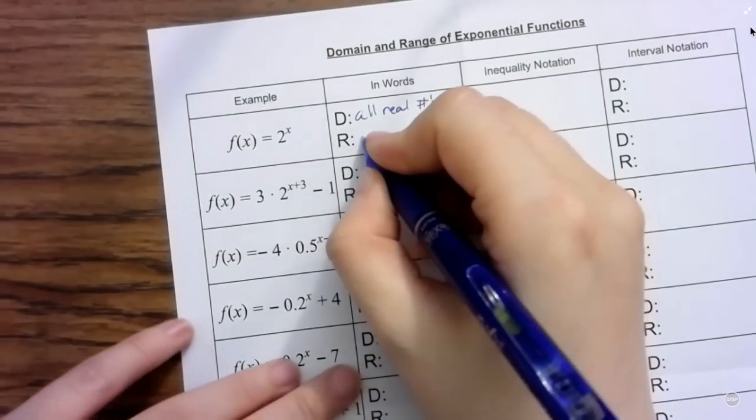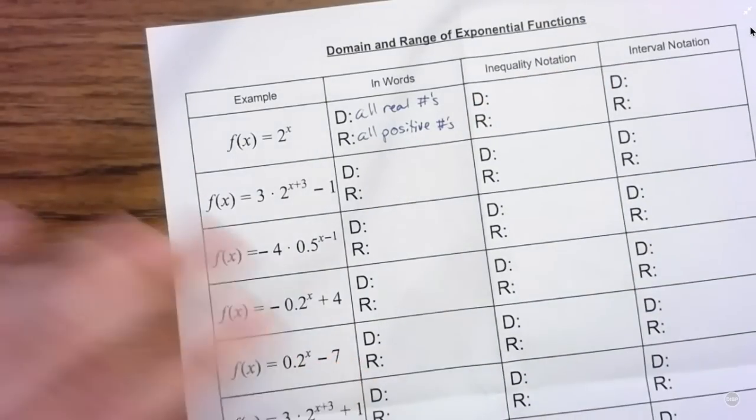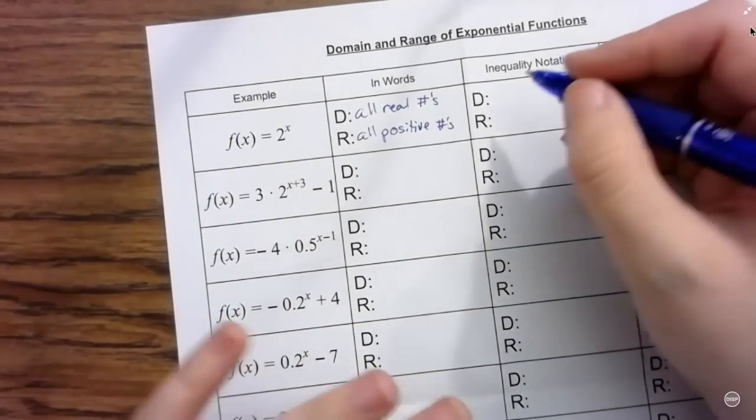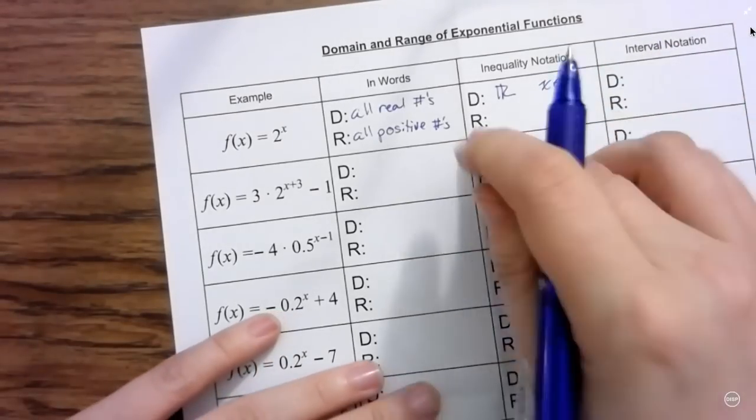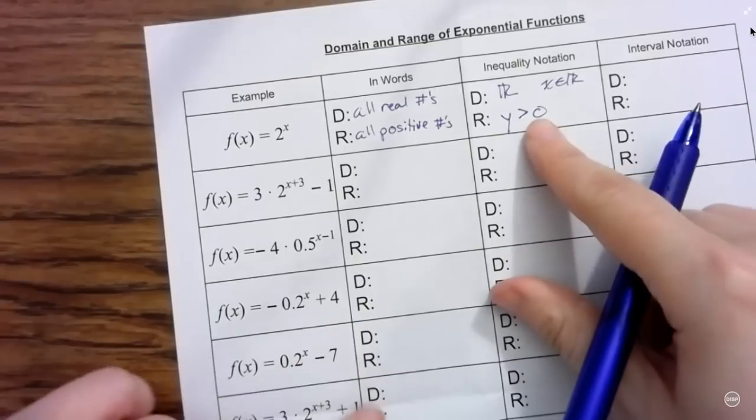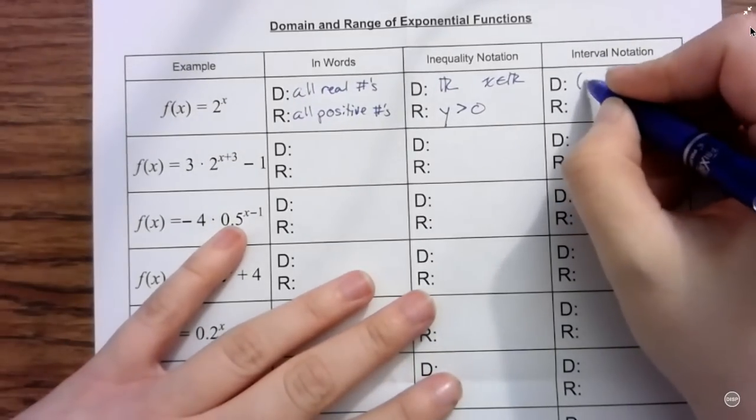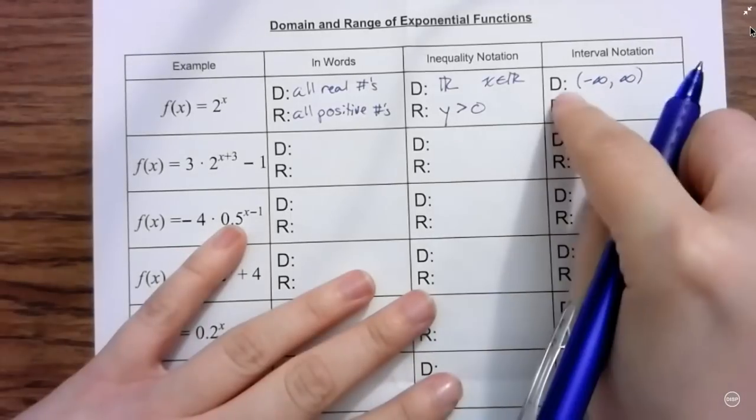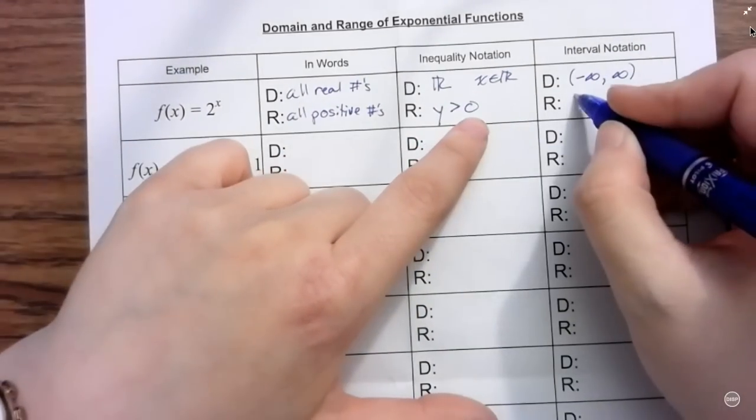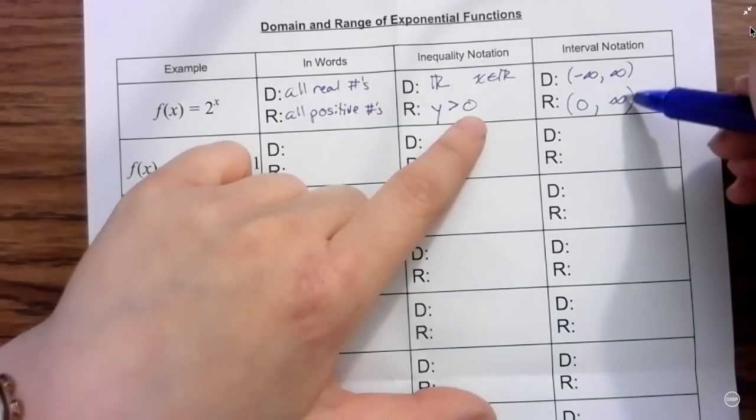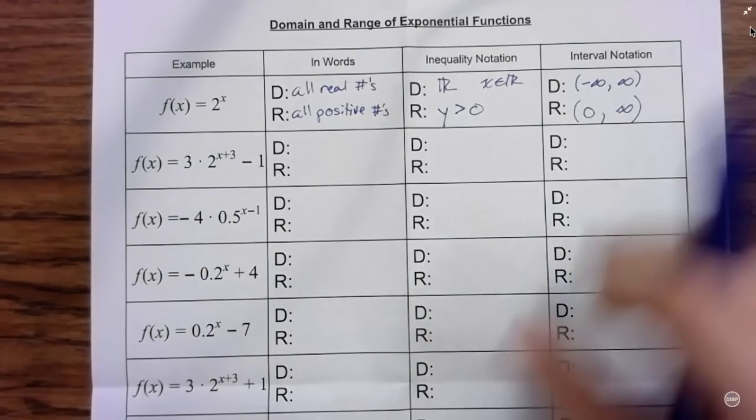So my domain in words is going to be all real numbers. And my range is going to be all positive numbers, so everything above zero. In inequality notation, which some of you prefer, you can still put all real numbers there, or more properly, x is an element of the real numbers. And for the range, you want to put y is greater than zero. Remember, we're not including zero, because that's where your horizontal asymptote is. Interval notation is this fun one, where we have negative infinity to infinity for domain, which is the same thing as all real numbers. And for the range, I can go from zero to infinity, not including zero. We never bracket infinity, because infinity is not actually a real number. In our case, it just means keep going forever. So don't ever bracket infinity.